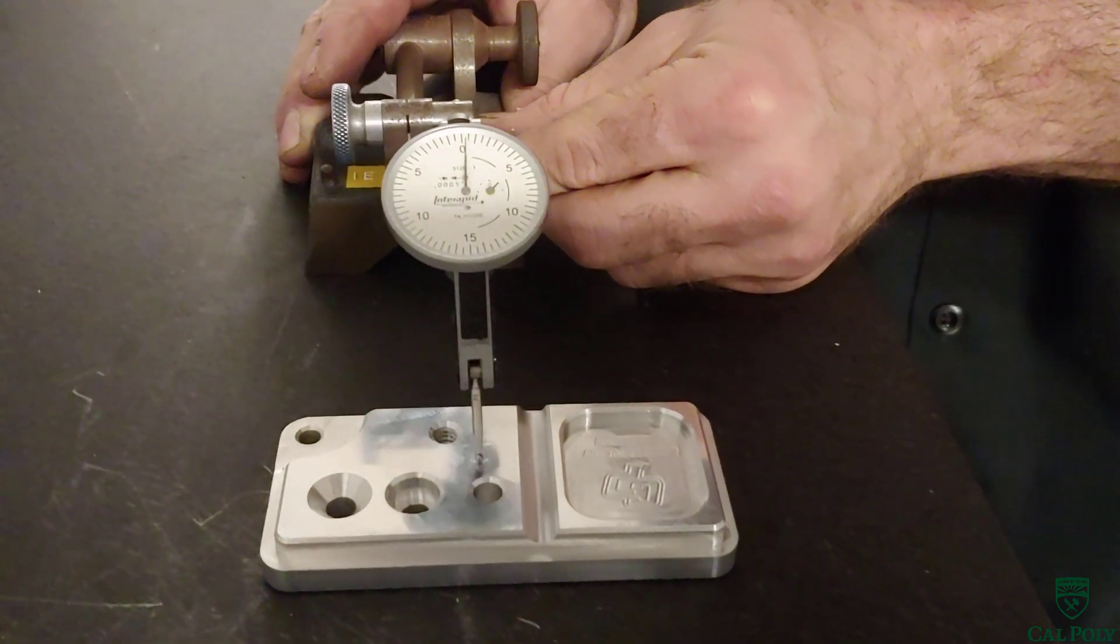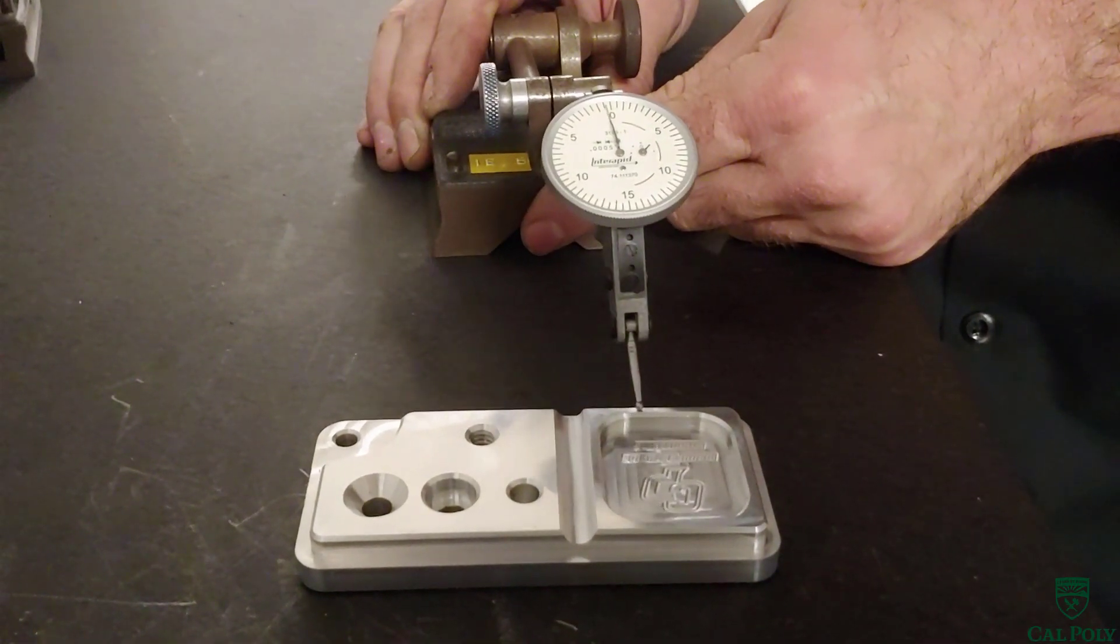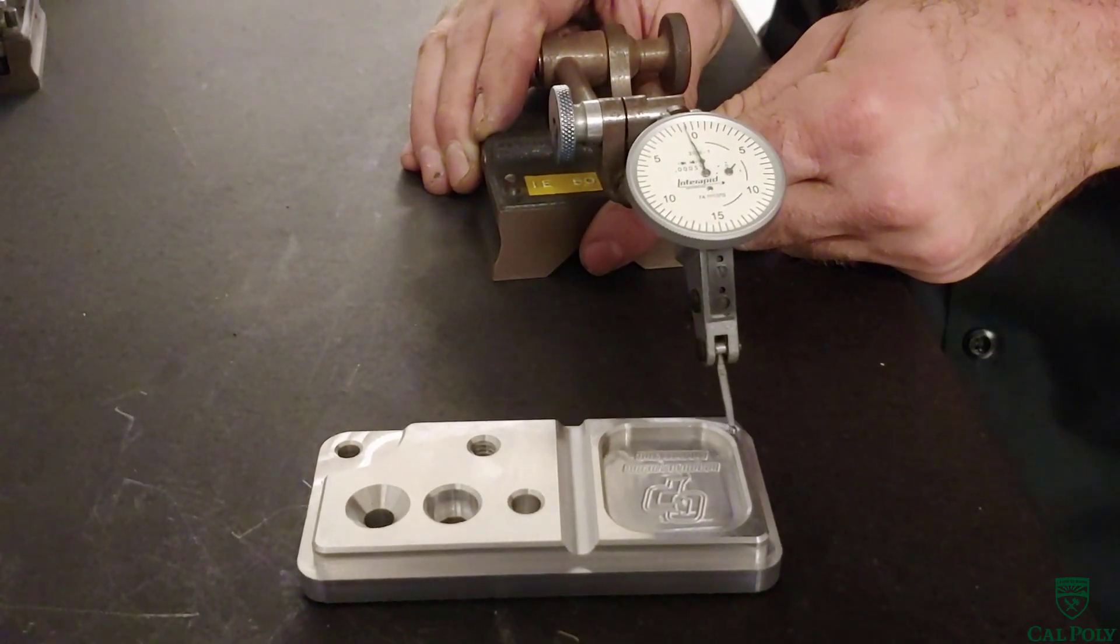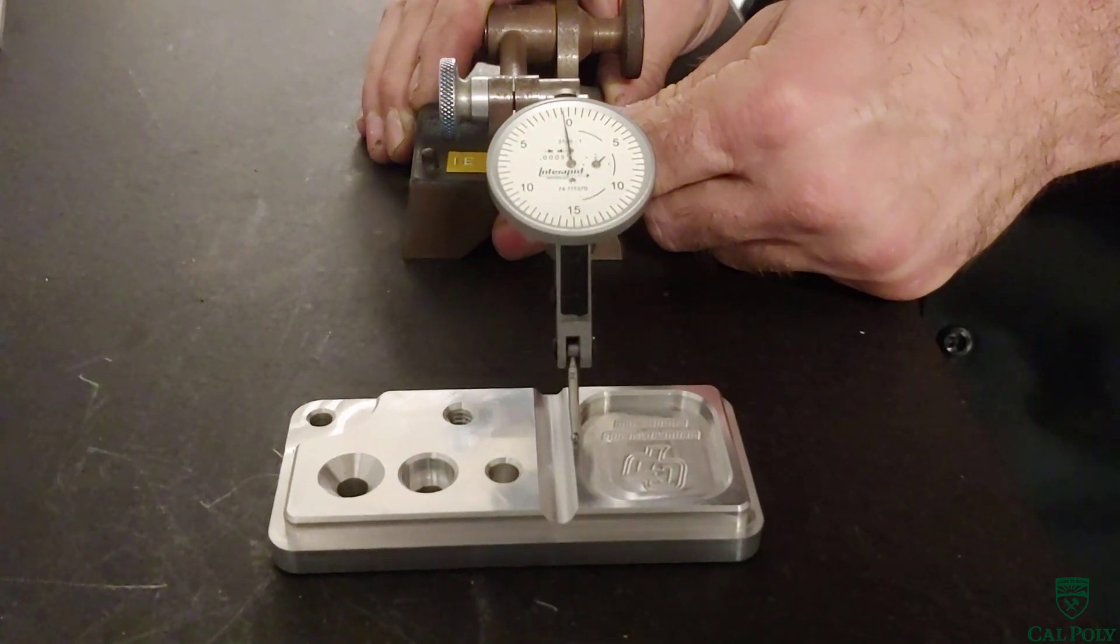We can see that there is some movement of the needle. This could be due to surface imperfections or a non-parallel part. Either way, in this case, the needle never exceeds three thousandths of an inch, so our part passes.